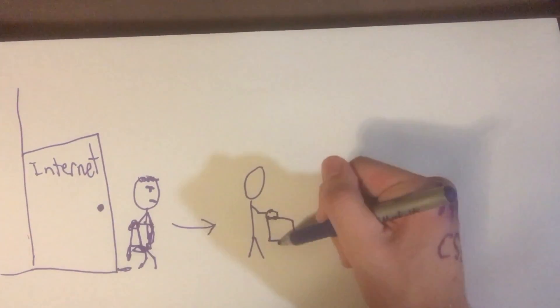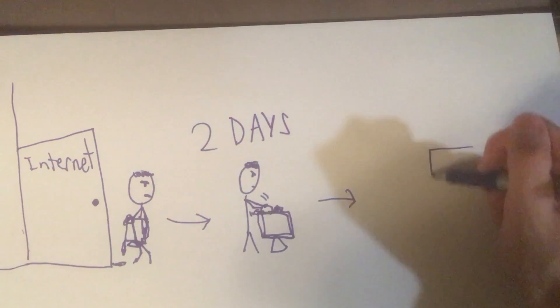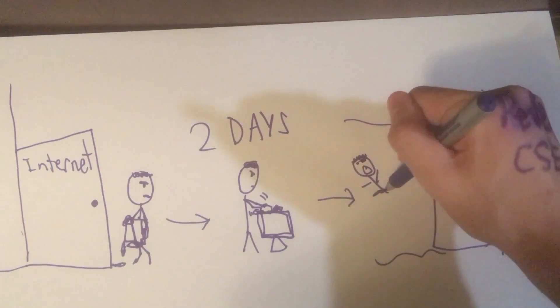Even worse, ridding a computer of the worm could take up to two days, and putting it back on the internet would almost immediately inundate it with new copies.